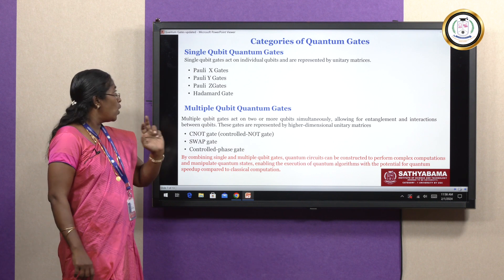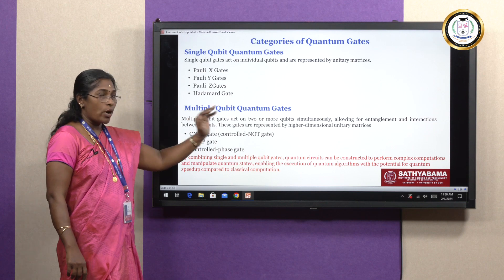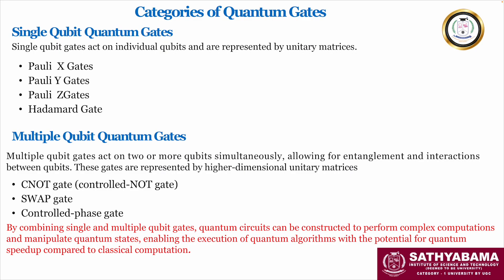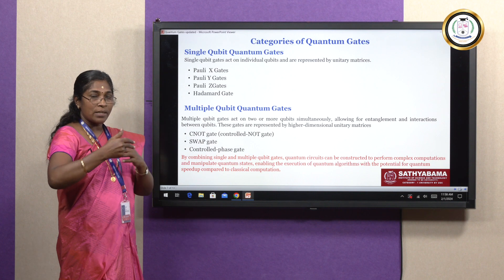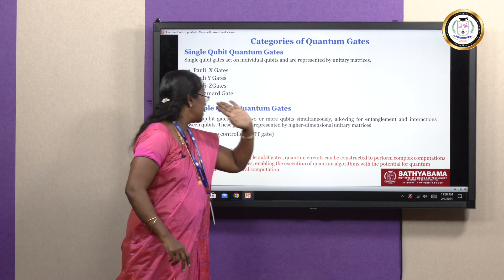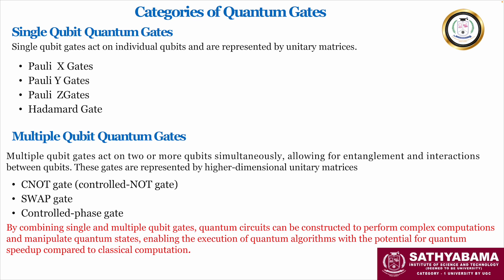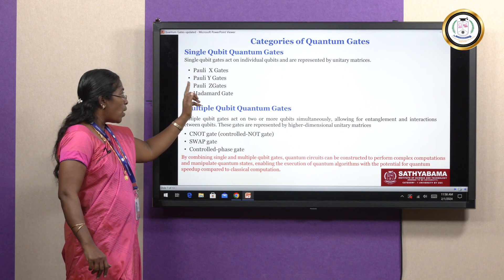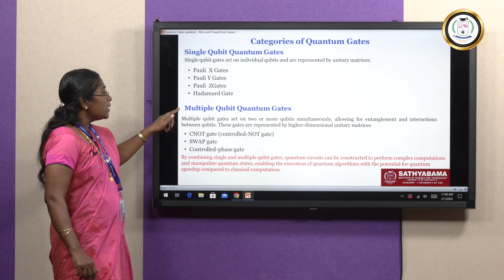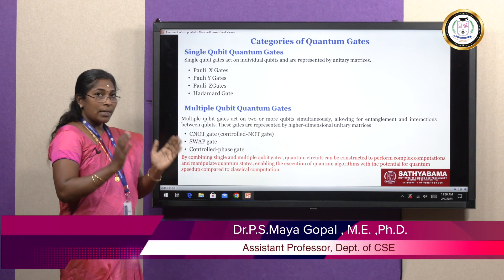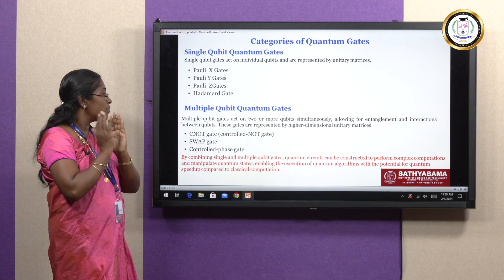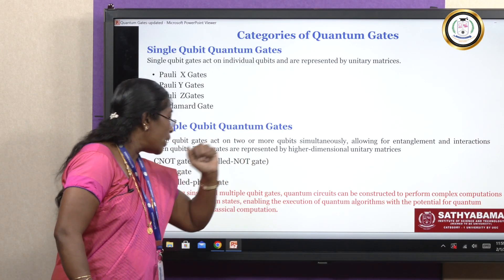There are a number of quantum gates, majorly classified into two: single qubit quantum gates and multiple qubit quantum gates. The single qubit quantum gate works on a single qubit and is represented by a 2D unitary matrix. The multiple qubit quantum gate works on more than 2 qubits, and based on the number of qubits used, the dimensions vary. Today we will see the basic single qubit quantum gates — Pauli X, Pauli Y, Pauli Z, and Hadamard — and the multiple qubit gates: CNOT gate, SWAP gate, and controlled phase gate. By combining single and multiple qubit gates, quantum circuits are constructed to solve complex problems using quantum algorithms.